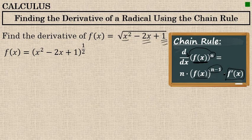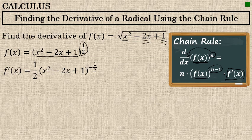In this situation, my function is x squared minus 2x plus 1, and the power is 1 half. To differentiate with the chain rule: first, we take the power of 1 half and move it to the front. x squared minus 2x plus 1 remains unchanged, and the original power, 1 half, is reduced by 1 to become negative 1 half. 1 half minus 1 is negative 1 half.